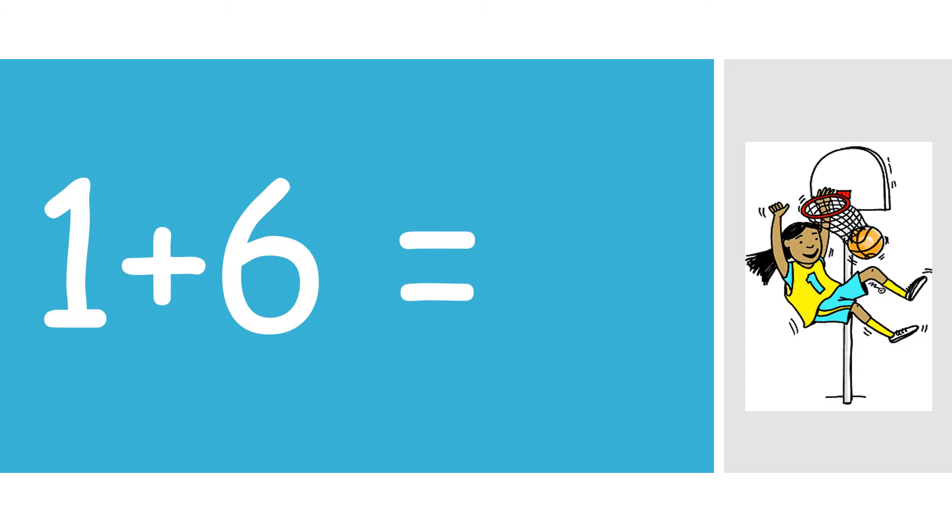1 plus 6. When you're looking at a problem like this, look at the bigger number. I start with 6. 6 plus 1 is the same as 1 plus 6. If I have 6 and I count on 1, I will have what? That's right, 7. Do 7 basketball shots. My favorite.